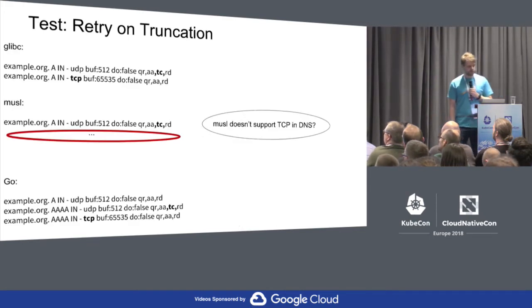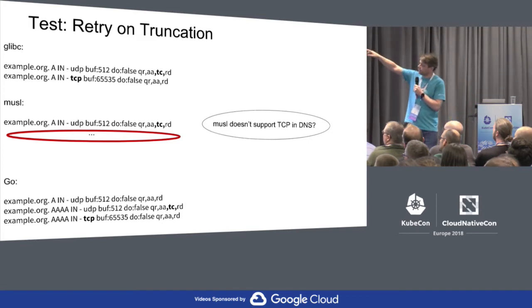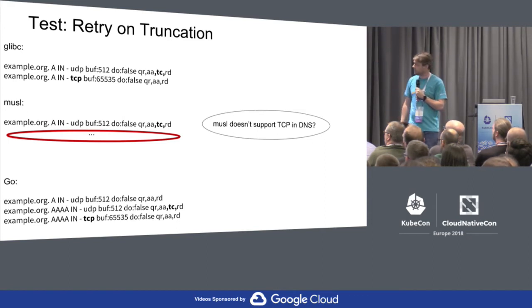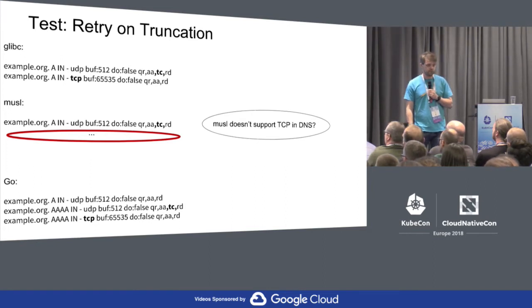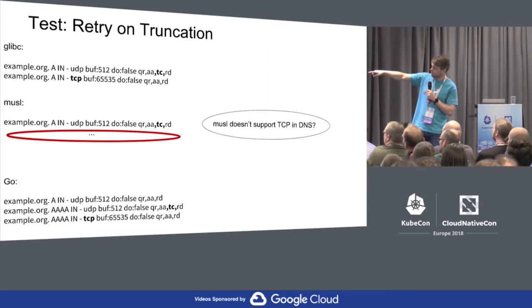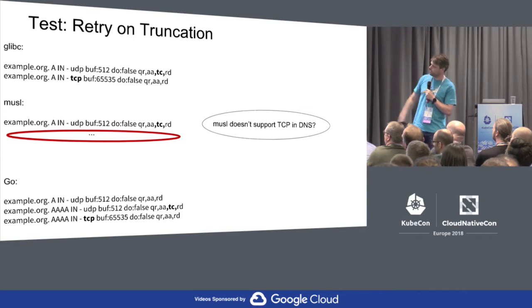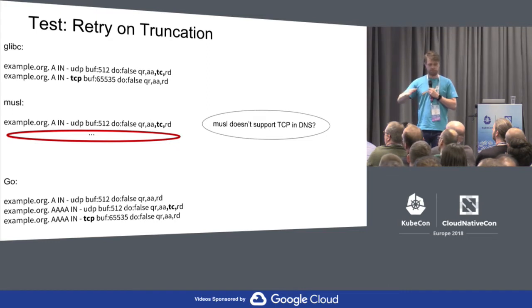Let's test this. glibc: you see the log and you see the TC bit in bold, and you see the TCP query — it comes back with a new query over TCP with maximum size 64K, so we can put all the stuff in there hopefully. musl libc: we give it TC and we don't see anything. musl doesn't react to TC. In Go, you see both A and AAAA because it's impossible to disable that behavior, but it does the right thing. It gets a correct response on the A query, then gets truncated on the AAAA query and comes back with TCP on the AAAA. This is good.